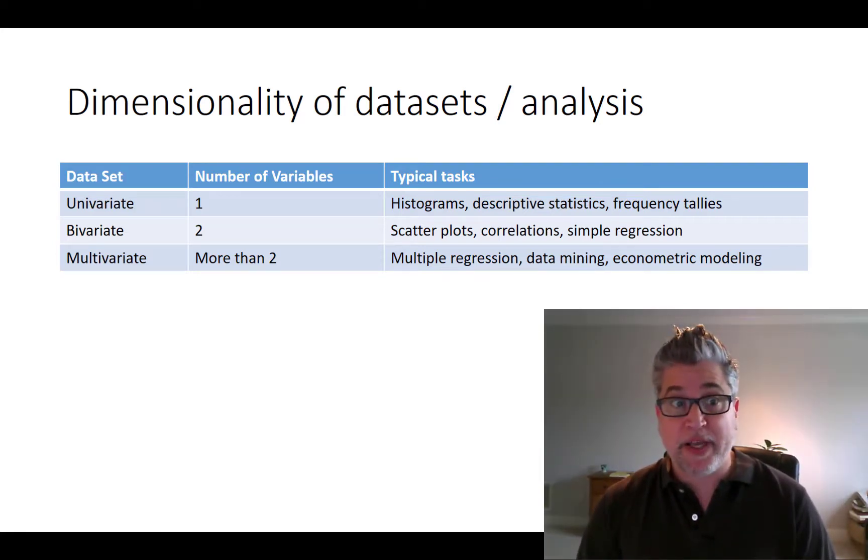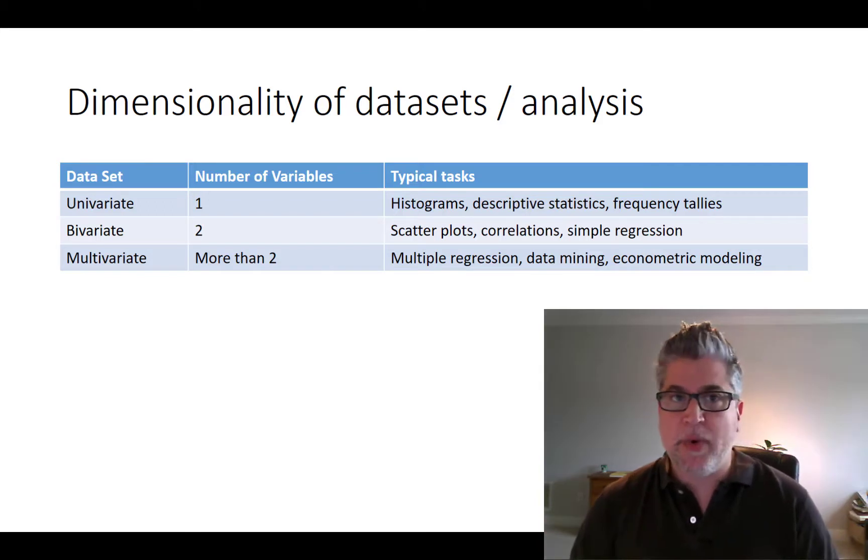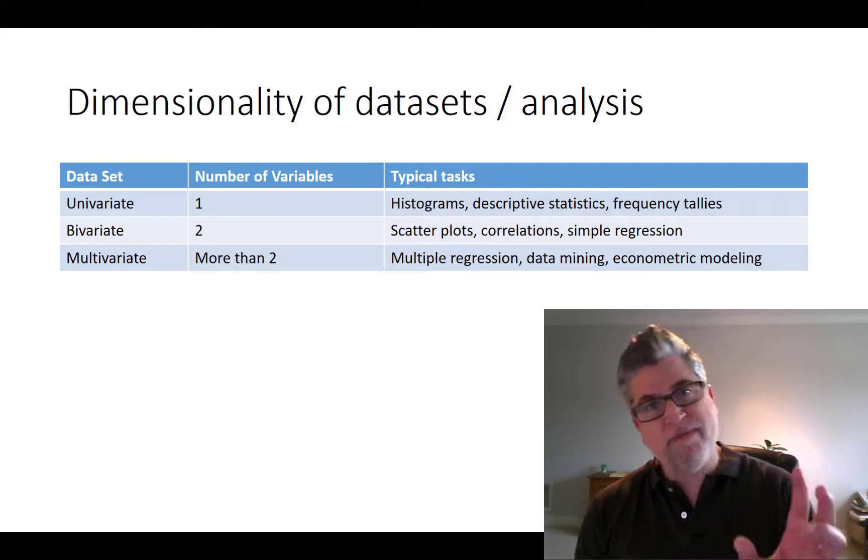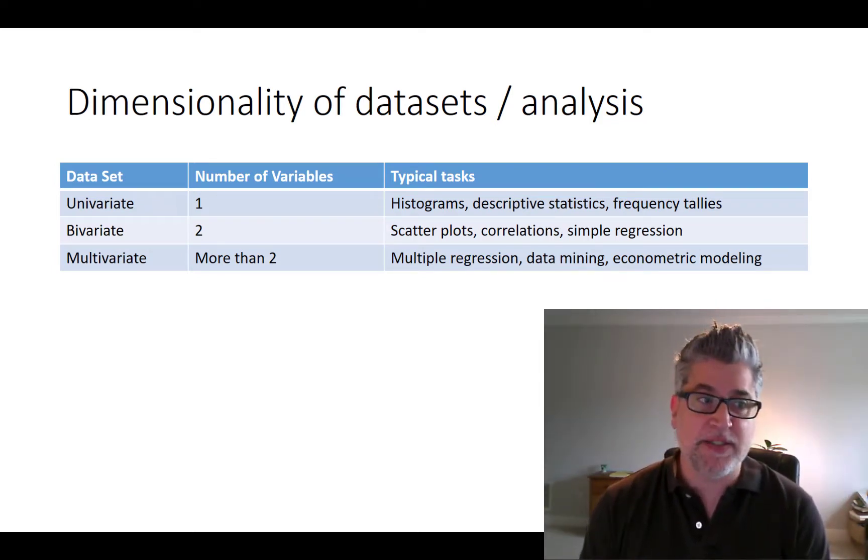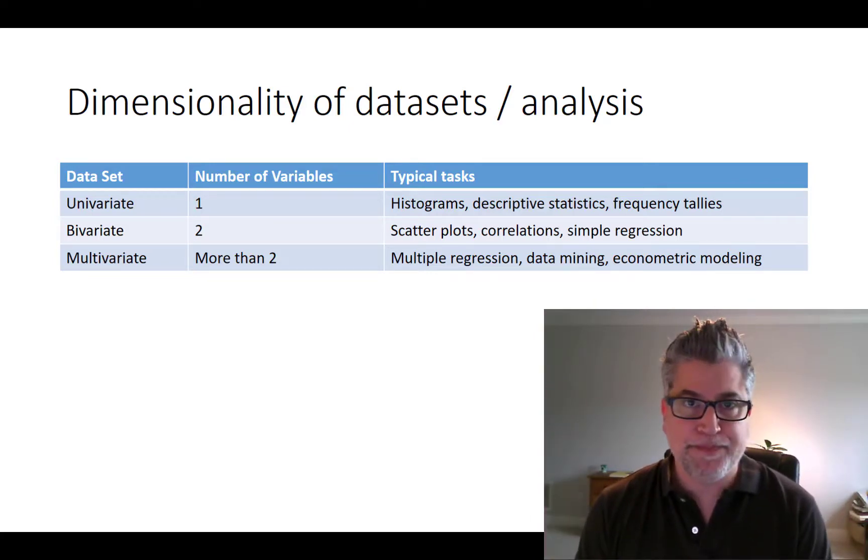Speaking of correlation, you might want to know how two particular variables vary together. For example, what is the relationship between study time and grade in the class, or the correlation between gender and income? Anytime you're relating two variables, you're doing a bivariate analysis. Simple things there are correlations and covariances. Graphically, a scatter plot is a great way to do that kind of analysis. You can get much fancier with regression analysis, which is basically fitting a straight line that best describes those points.